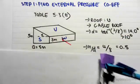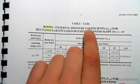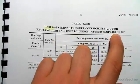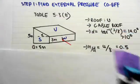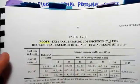We're going to flip over the page, and if we look at table 5.3b, we've got roofs external pressure coefficient CPE for rectangular and clover roofs upward slope U and alpha greater than 10 degrees. So we have an upward slope and our alpha is greater than 10 degrees, so we're going to be working in this table.